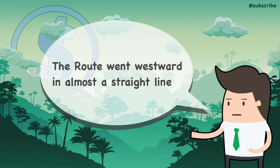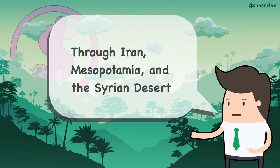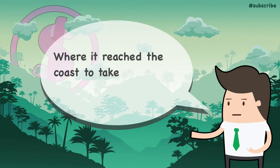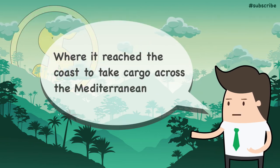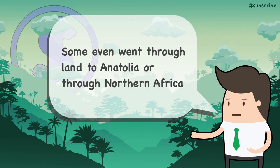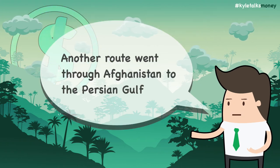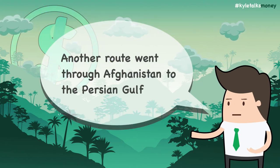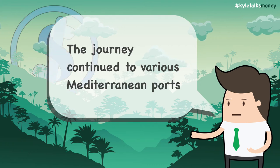From Merv, the Southern Route went westward in almost a straight line through northern Iran, Mesopotamia, and the northern outskirts of the Syrian desert, to reach the Levant where ships were waiting to take the precious cargo across the Mediterranean to southern Europe. Continued travel overland was also possible from the Levant, either north through Anatolia or south to northern Africa. There was also a branch of the Silk Road that went from Herat in Afghanistan to the ancient port of Karakoram by the Persian Gulf, passing through Susa on the way, with the journey continuing by ship to various Mediterranean ports such as Petra.